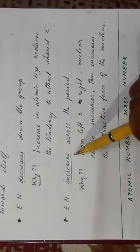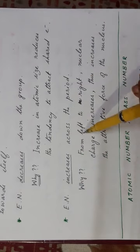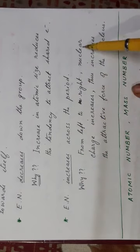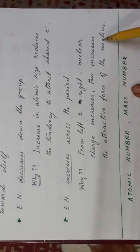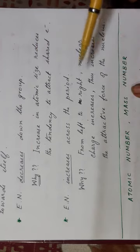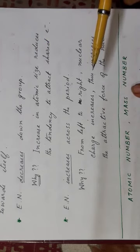Again, the electronegativity decreases across the period. Now from left to right, the nuclear charge increases thus this increases the attractive force of the nucleus. Now what we see here, the explanations in both cases is very similar to the electron affinity.